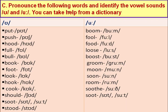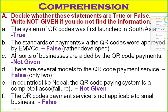Pronounce the following words and identify whether the vowel sounds are short ʊ or long uː — you can take the help of a dictionary. Words with the short ʊ sound: put, push, hood, pull, bull, book, look, hook, cook, should, and stood. Words with the long uː sound: boom, food, loose, boost, groom, moon, tune, room, and sooth.